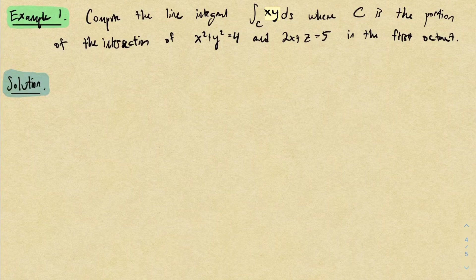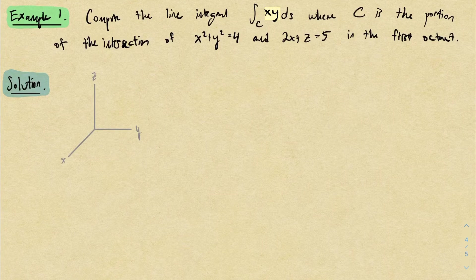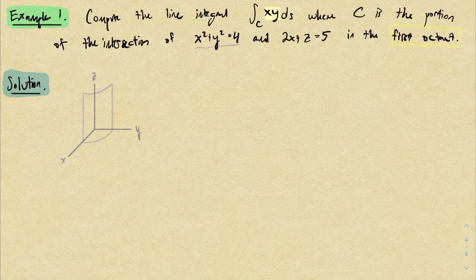I'll begin by drawing a picture. Here's the first octant of the three-dimensional world. Then I'll think about this first surface in blue: x squared plus y squared equals 4. In the xy plane that's a circle. As a surface there's no z restriction, so it just goes up and down forever and it would be a cylinder. In the first octant I would just see this slice of the cylinder.